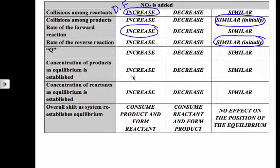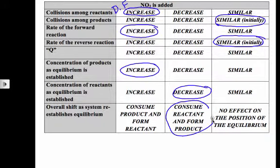Now, the concentration of products as equilibrium is established is going to increase because our forward rate is increasing. Our reactants will decrease. That means to reach equilibrium, we're going to consume reactant and form product, which is a shift right.